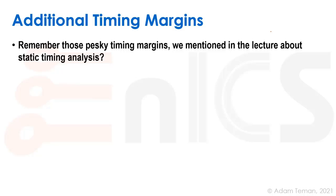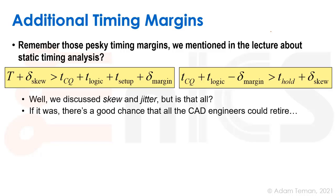So do you remember those pesky timing margins that we mentioned in the lecture about static timing analysis? If we look at the max delay and the min delay formulas, we added a plus delta margin to the data path and minus delta margin to the data path. It was some extra margin that we just added or subtracted to make our life harder, and we discussed skew and jitter — showing how each can be added or subtracted from our formulas.